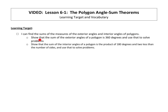We will be able to show that the sum of the exterior angles of a polygon is 360 degrees and use that to solve problems. We will also be able to show that the sum of the interior angles of a polygon is the product of 180 degrees and 2 less than the number of sides, and use that to solve problems.